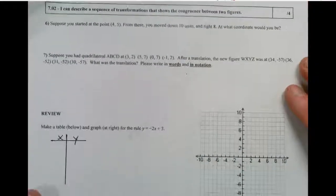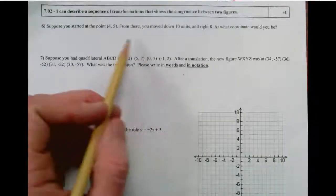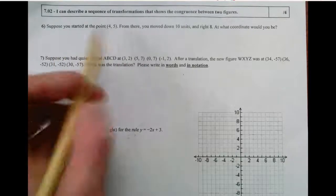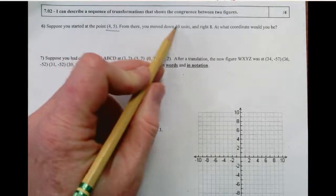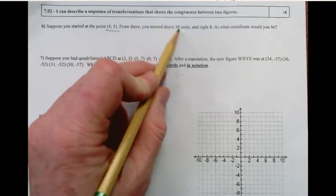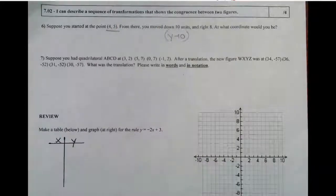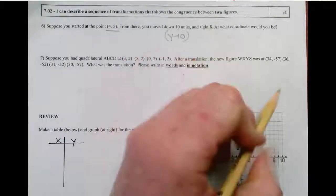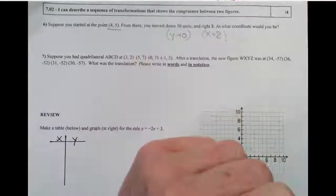Problem number six. I'm surprised how many people got this wrong. I think it was because of the order in which I wrote the problem. But it says, suppose you started at the point (4, 5). From there, you moved 10 units, or excuse me, down 10 units. That's y minus 10. Down is the y-axis. And right 8. That's x plus 8.